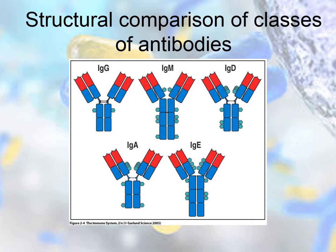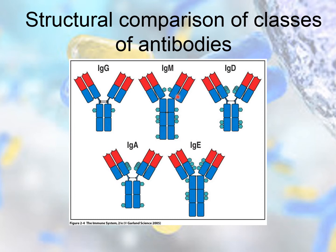This figure shows a structural comparison of the five different classes of antibodies. A hinge region or flexible region is present in IgG, IgD, and IgA, but it is absent in IgM and IgE. That is because IgM and IgE have an extra constant region of the heavy chain instead. So IgG, IgD, and IgA have three constant regions of the heavy chain, while IgM and IgE have four.